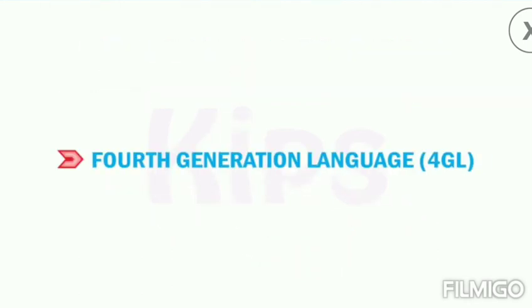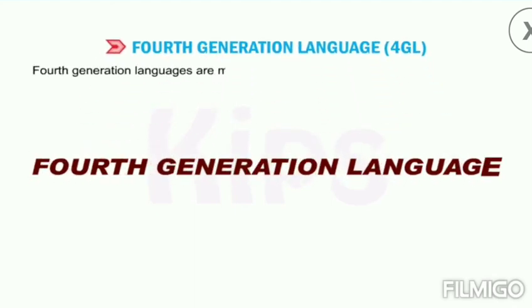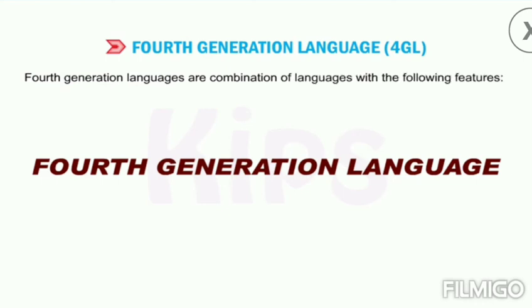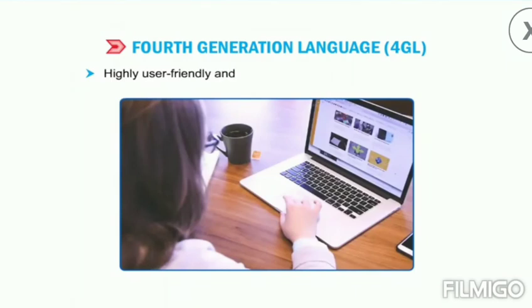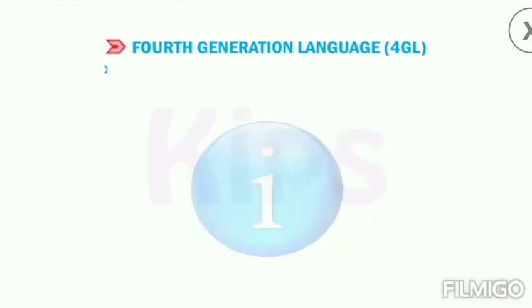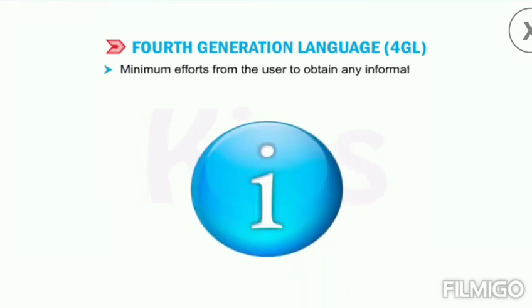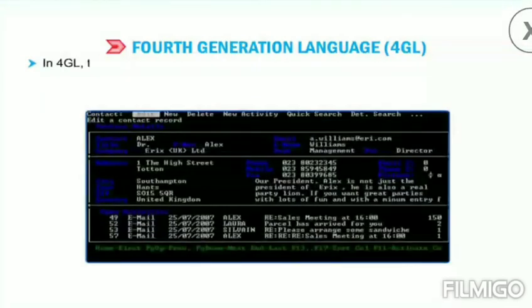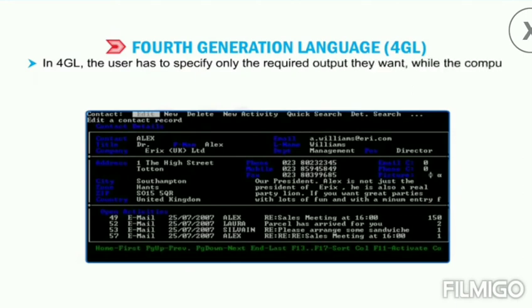Now let's talk about fourth generation language (4GL). Fourth generation languages are more similar to human languages than previous versions, and are highly user-friendly and independent of any operating system. They offer very high speed of execution, are designed to reduce the level of programming effort, and reduce the overall time and cost of software development. In 4GL, the user only has to specify the required output they want, while the computer determines the sequence of instructions to accomplish those results.